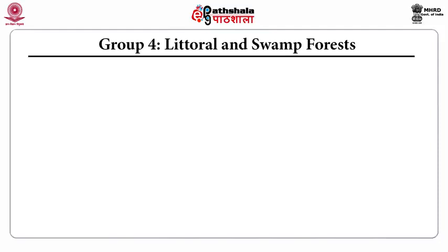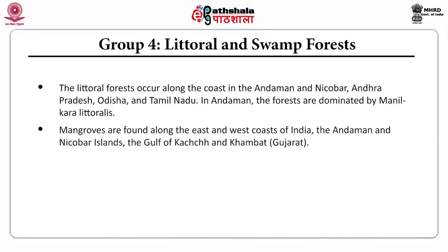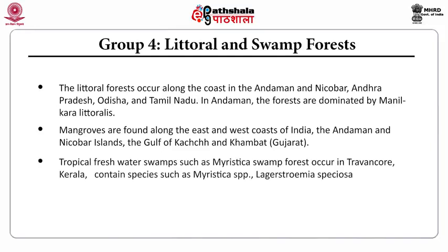Group 4 is represented by the littoral and swamp forests in India. They occur along the coast in the Andaman and Nicobar, Andhra Pradesh, Odisha, and Tamil Nadu. In Andaman, the forests are dominated by Manilkara littoralis. Mangroves are found along the east and west coast of India, the Andaman and Nicobar Islands, the Gulf of Kutch, and Khambhat in Gujarat. Tropical freshwater swamps such as Myristica swamp forests occur in Travancore, Kerala. Certain species such as Myristica species and Gymnacranthera species are present.